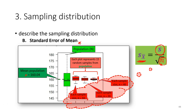If you collect an infinite number of samples and for each sample you calculate the mean, the distribution of the sample mean will follow a distribution that is more likely a normal distribution. At the same time you can also calculate the characteristics of this distribution using the mean and standard error of the mean. This distribution of sample means is what we call the sampling distribution.